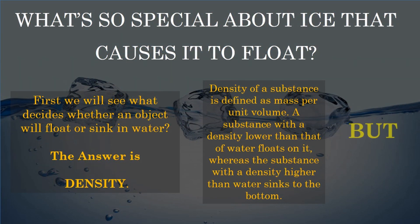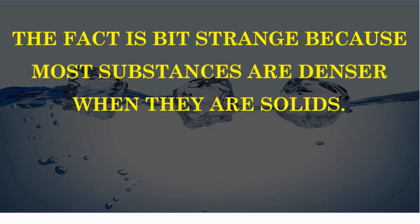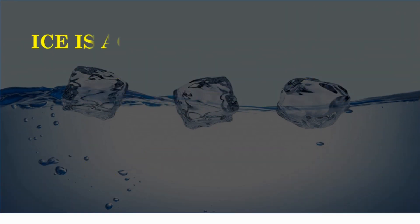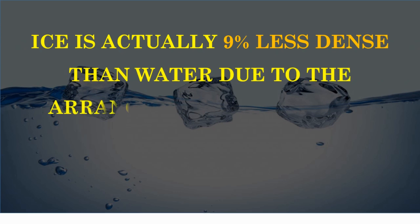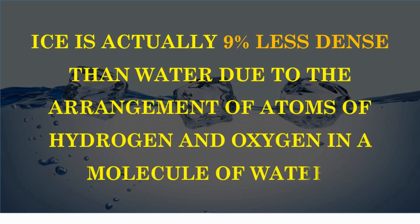But the fact is a bit strange because most substances are denser when they are solids. But ice is an exception. Ice is actually 9% less dense than water due to the arrangement of atoms of hydrogen and oxygen in a molecule of water.